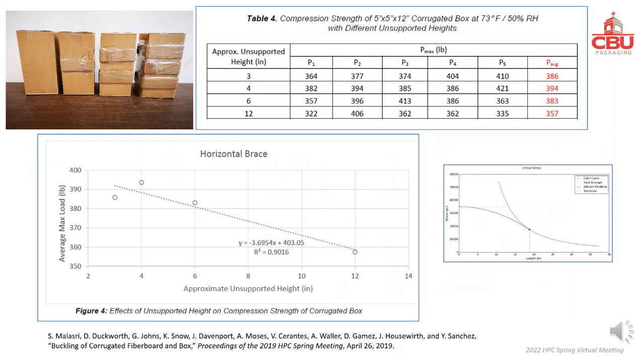This slide shows the effect of horizontal braces on box compression strength. More braces mean less unsupported length of the box, thus box strength increases.